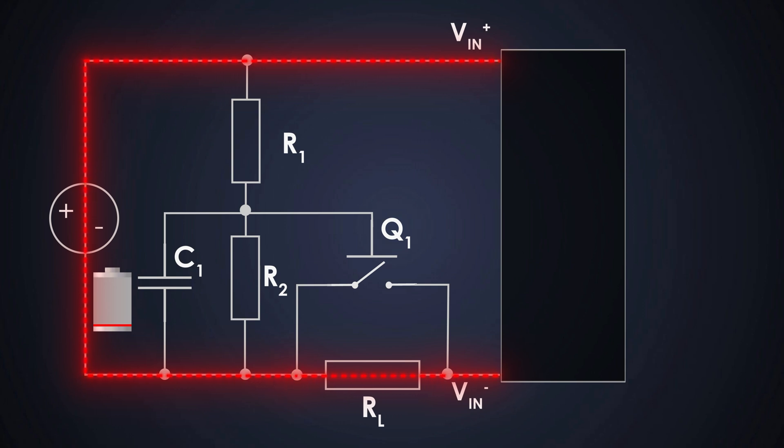So, the load charges up slowly. And this effectively limits the inrush current. Meanwhile, C1 is slowly charging through resistor R1. As C1 charges, the gate voltage of the MOSFET increases. Eventually, it reaches a voltage high enough to turn on Q1, allowing current to bypass RL.